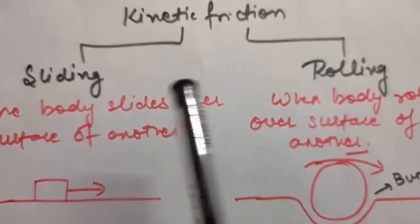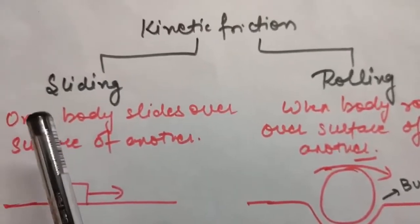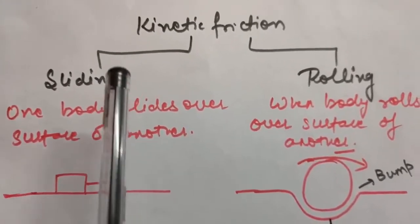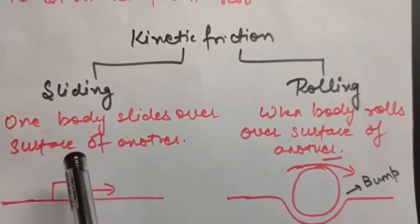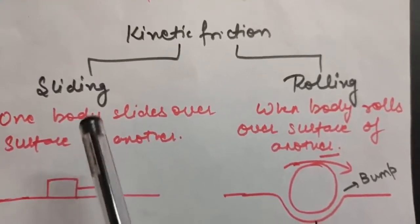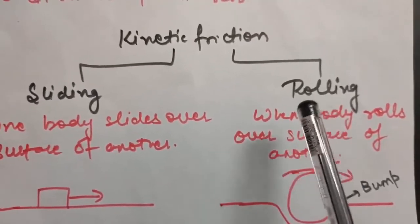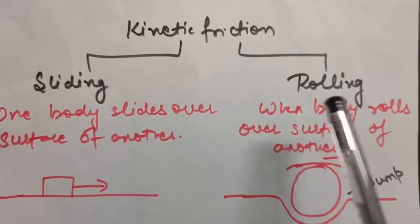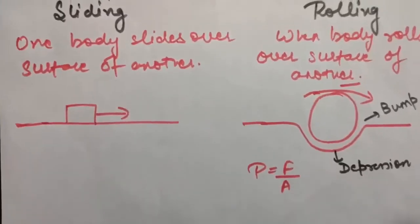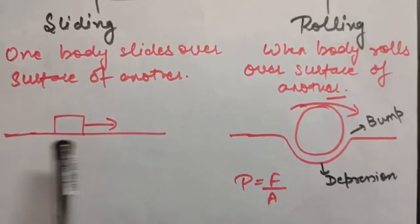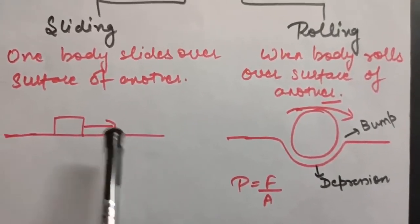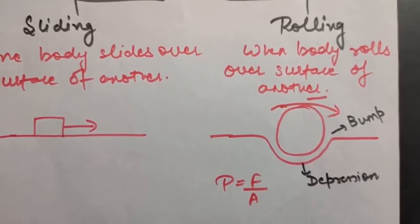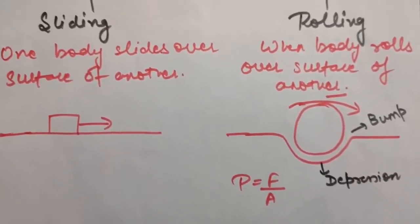Kinetic friction is of two types: sliding friction and rolling friction. The force of friction that comes into play when one body slides over the surface of another is called sliding friction. Similarly, the force of friction that comes into play when one body rolls over the surface of another is called rolling friction. For example, when a block moves over a table, that is sliding friction; when a wheel moves on a road, that is rolling friction.